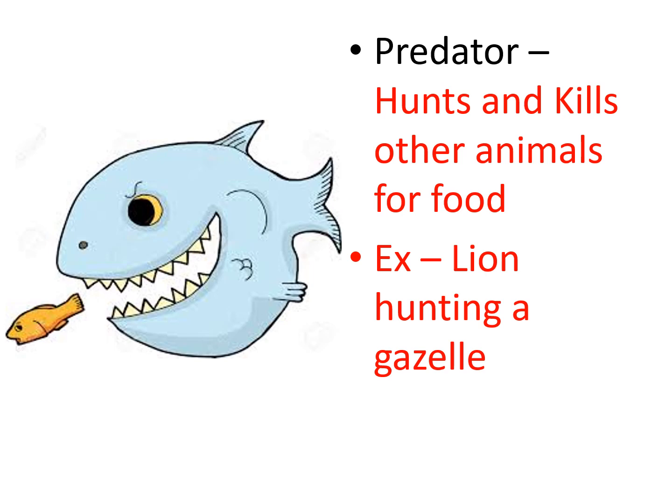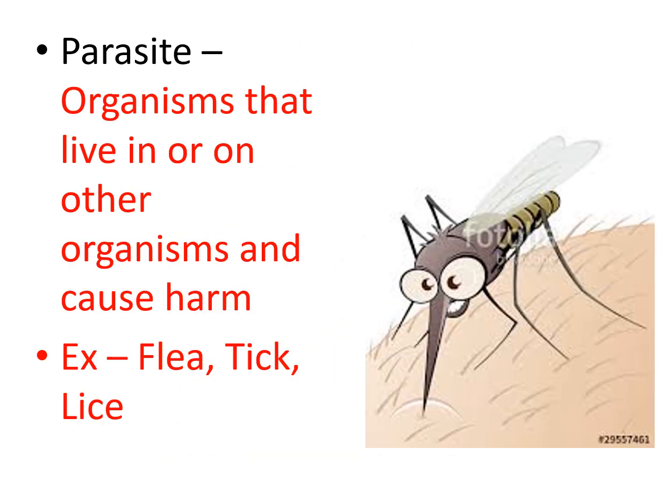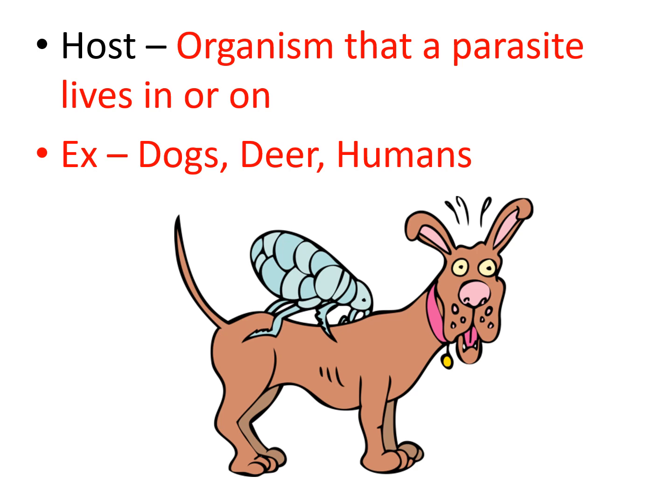A predator hunts and kills other animals for food, and prey is what is hunted or killed by the predator. In a parasite-host relationship, one is getting harmed while the other is benefiting. For example, fleas, ticks, and lice are all parasites, and the host is what they live on — a dog or a human that has a tick on it.